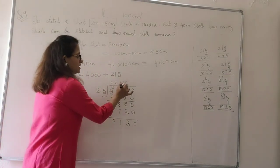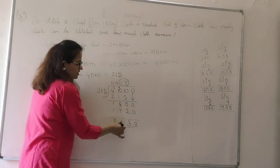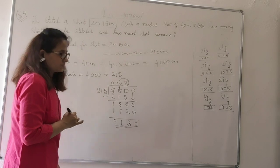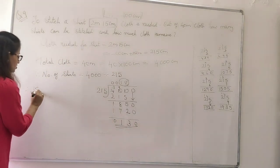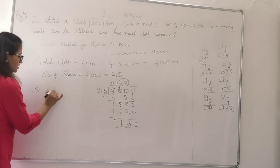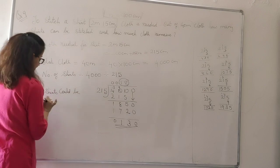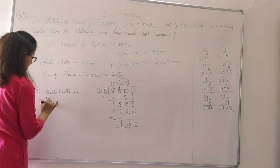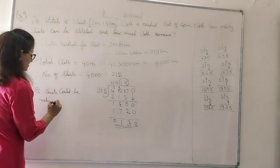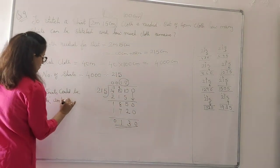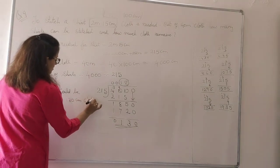So, how many shirts would be made? 18 shirts could be made. And this much cloth will remain unstitched. Therefore, what will be the concluding statement? 18 shirts could be made. And how much cloth remains? And 130 centimeters cloth will remain.